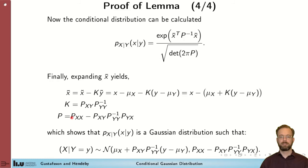Finally, we just have to expand the different components in this expression to get the end results. We have X-bar is equal to, after some steps, X minus the expected value of X plus K times the observed value of Y minus the expected value of Y. K as given before and P.